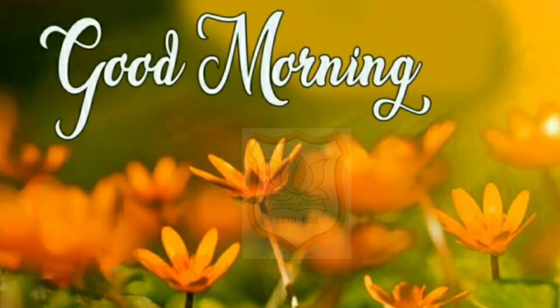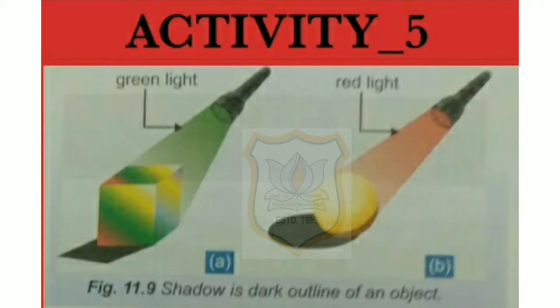Good morning dear students, welcome to PNMRC eLearning Classes. Activity 5 is about showing that a shadow is a dark outline of an object. Things needed: a torch, green and red cellophane, paper, multicolored cube, and yellow ball.